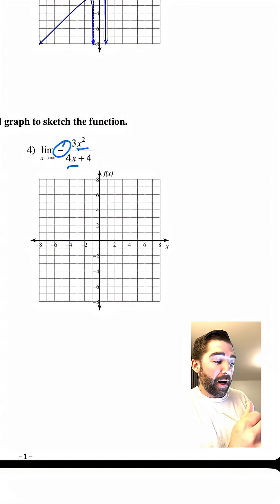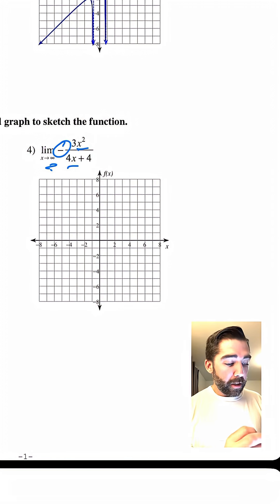So what's happening? As we approach positive infinity, well, the number is getting bigger and bigger on the numerator, but not so much on the denominator. So we're going to be reaching, in this case, negative infinity because of that negative right there.